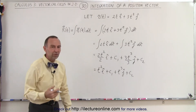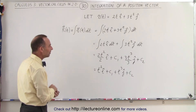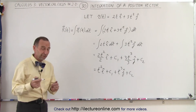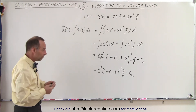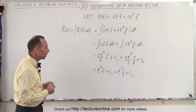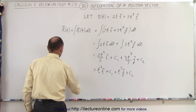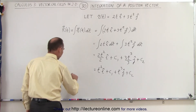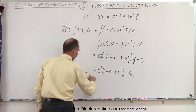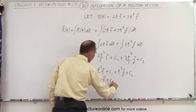Now what do c1 and c2 represent? Well, c1 and c2 take on value when t is equal to 0. It'll be the value of the vector r when t is equal to 0. So evaluating at t equals 0, this is going to be equal to 0 in the i direction plus c1, plus 0 in the j direction plus c2.